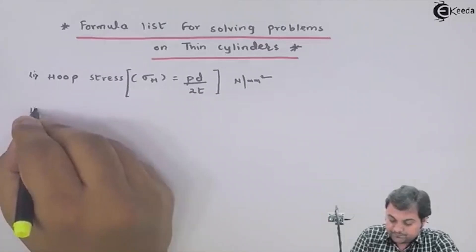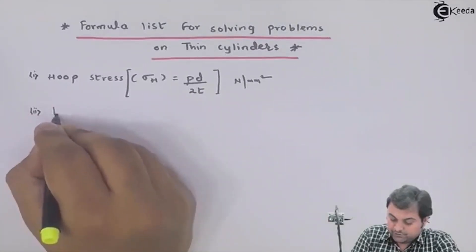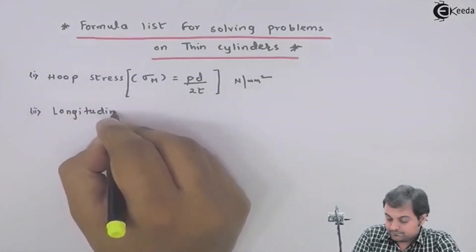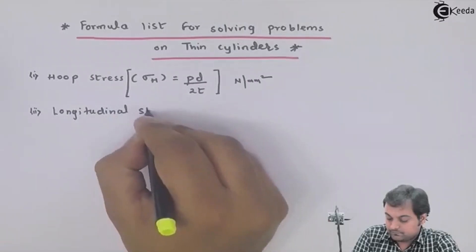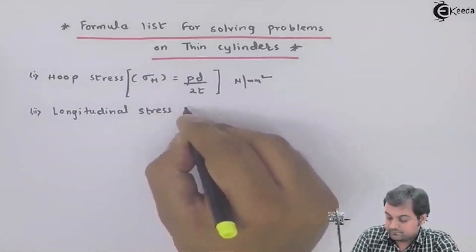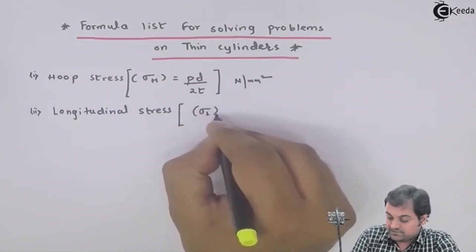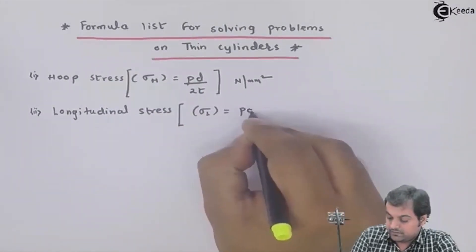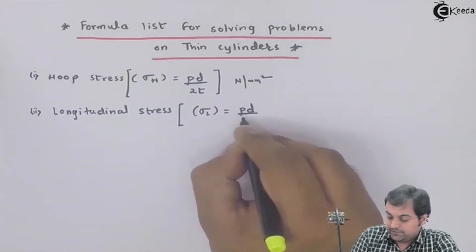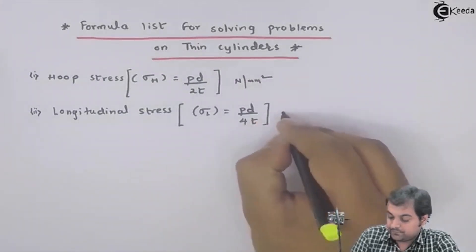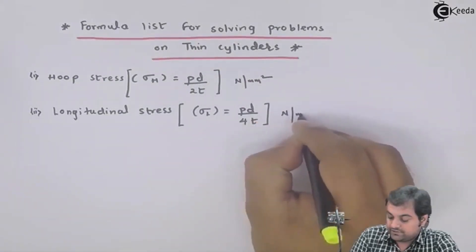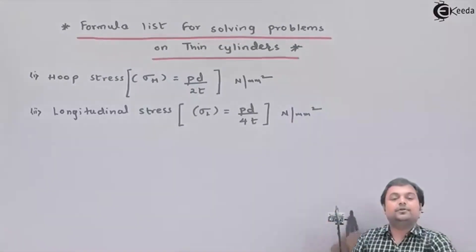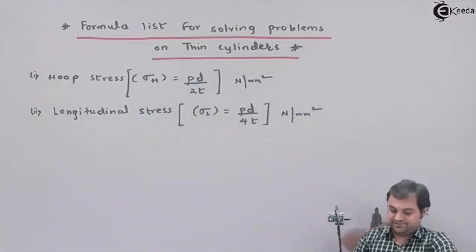Next, longitudinal stress — sigma suffix L is equal to Pd upon 4t. The unit is again Newton per m squared because these are internal stresses.